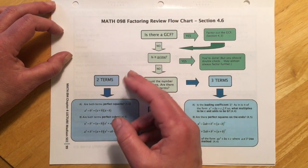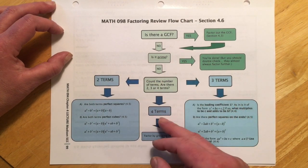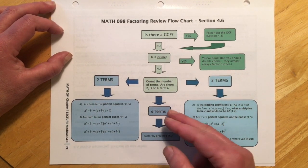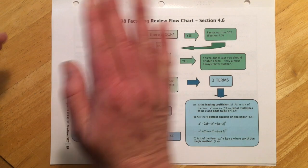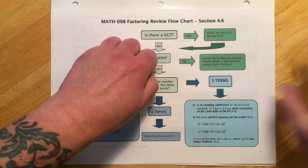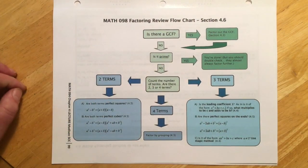So then we see how many terms there are. It's either going to be two terms, three terms, or four terms. If it's four terms, that's the nice grouping ones where you just kind of cover up half and do the first part and work on the second part and then take that factor out.